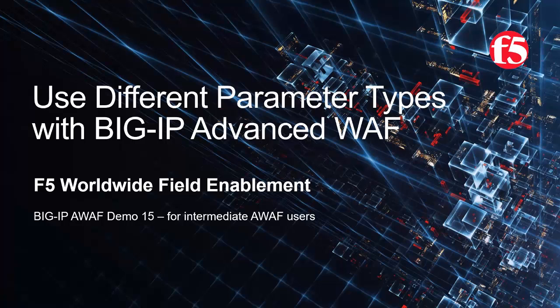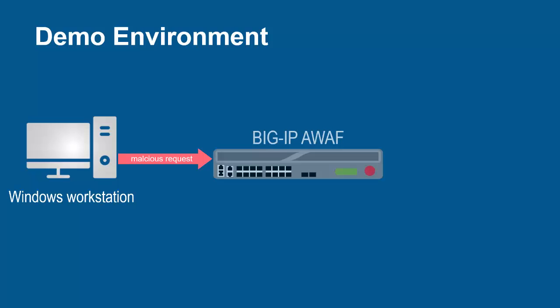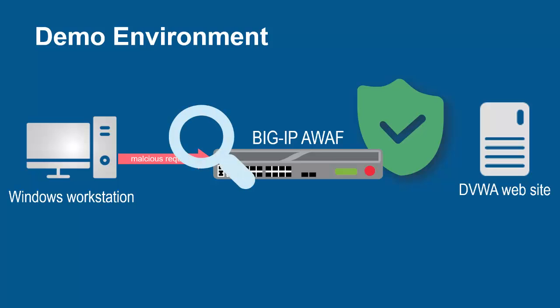For optimal viewing, we recommend using full screen mode. The environment for this demo contains three devices. A Windows workstation will be used to submit malicious web application requests. These requests will arrive at the F5 BIG-IP system running Advanced WAF. The BIG-IP system sits in front of and protects the backend web application. Using its full proxy architecture, it examines every request and can block all malicious requests, preventing them from going to the backend web servers.